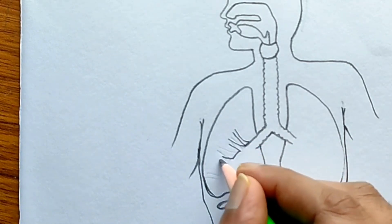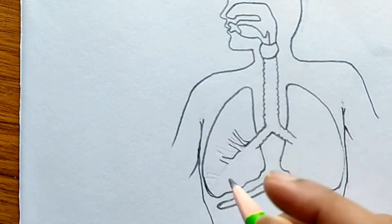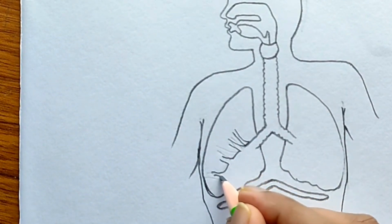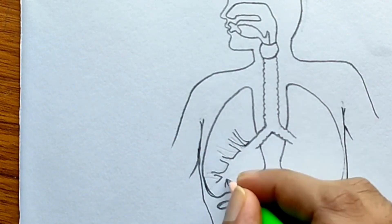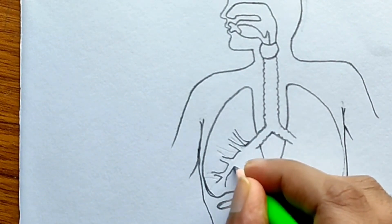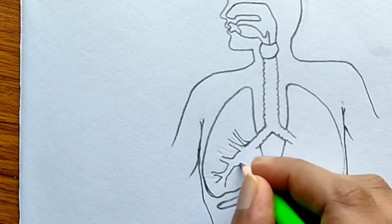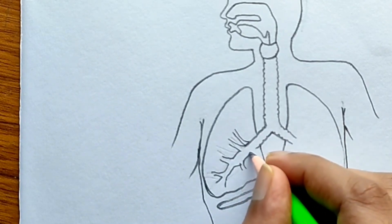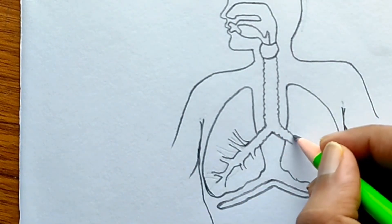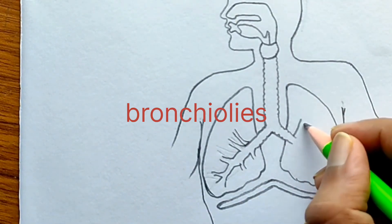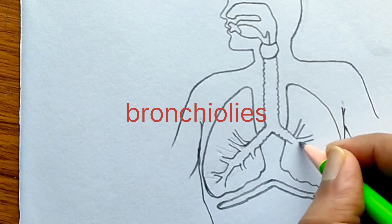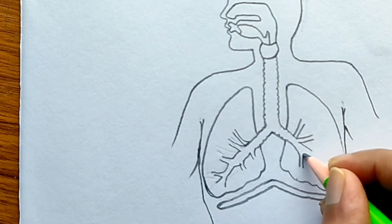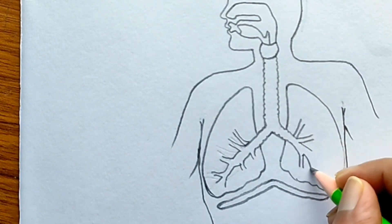The increased pressure causes CO2 present in the lungs to go outside. When the dome of the diaphragm is pushed downwards, the volume in the thoracic cavity increases, decreasing the pressure of the air in the lungs and helping oxygen to be taken inside the lungs.